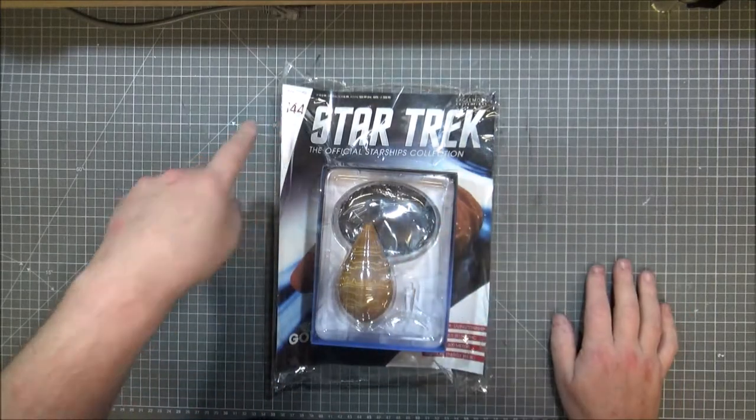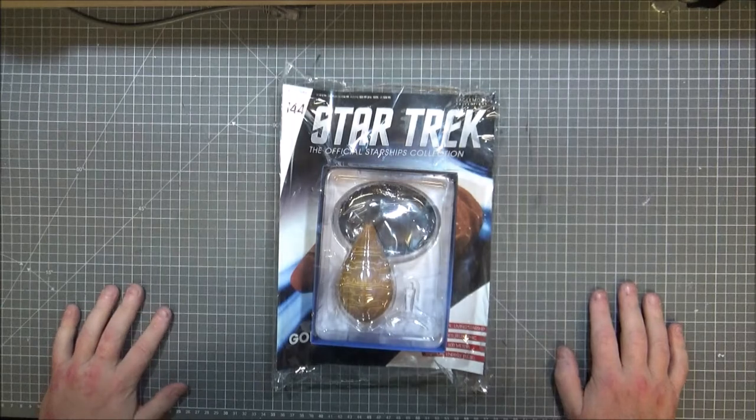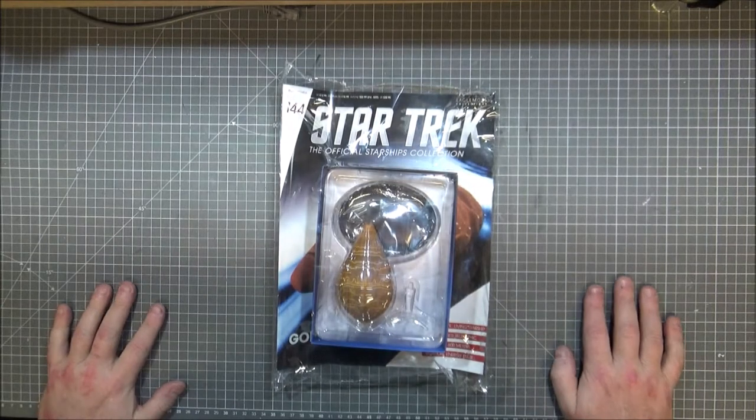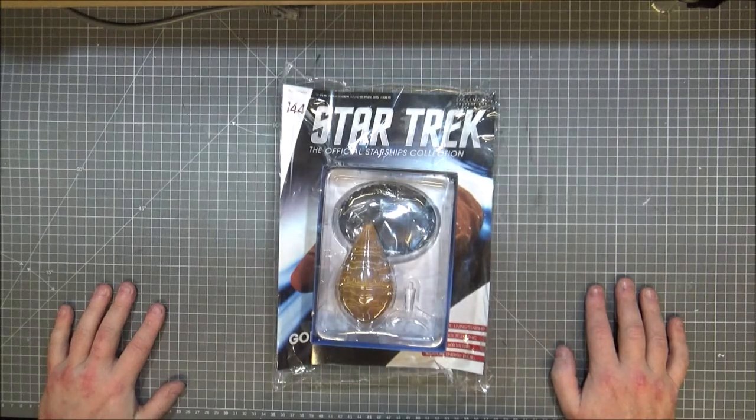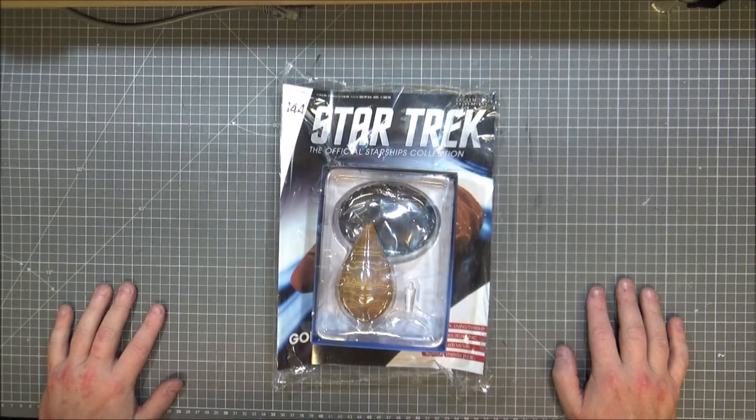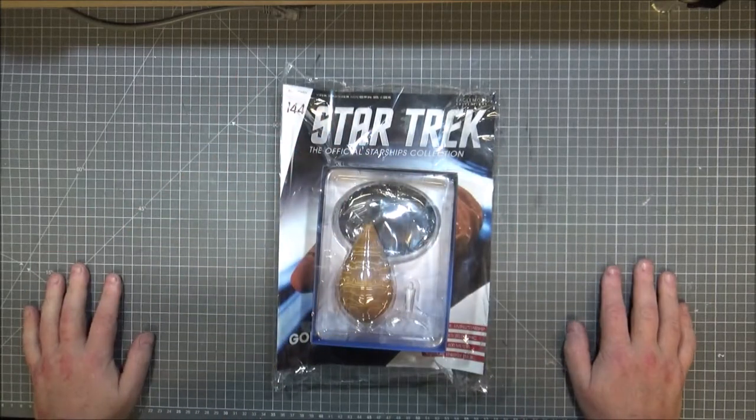This time it's issue 144, which is the Gomtu. This has been from the Next Generation Series 3, I think it was. It was Tam Elbrun who got in touch with the Gomtu Space Probe thing, whatever it was.